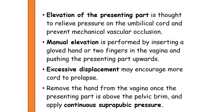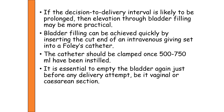Manual elevation of the presenting part is performed by inserting a hand or fingers into the vagina and pushing the presenting part upward, which relieves pressure on the umbilical cord and prevents mechanical vascular occlusion. Care must be taken to avoid excessive displacement, as that can also cause cord collapse. Once the presenting part is above the pelvic brim, remove the hand and apply continuous suprapubic pressure to maintain its position. If the decision-to-delivery interval is likely to be prolonged, bladder filling is a practical alternative for maintaining elevation.